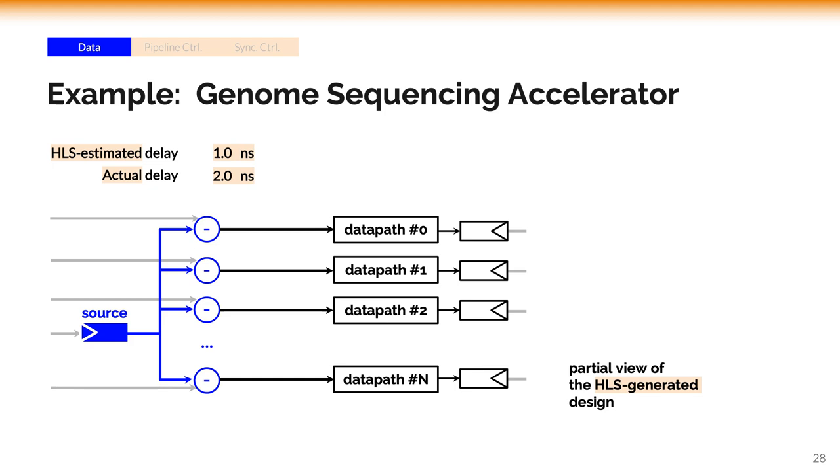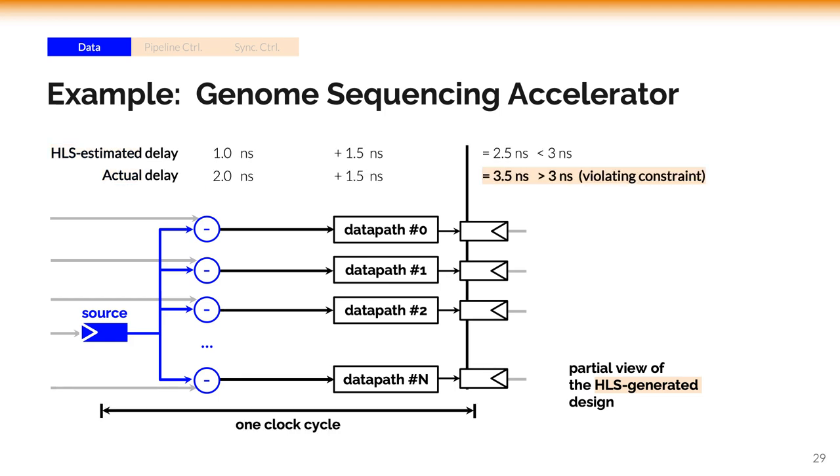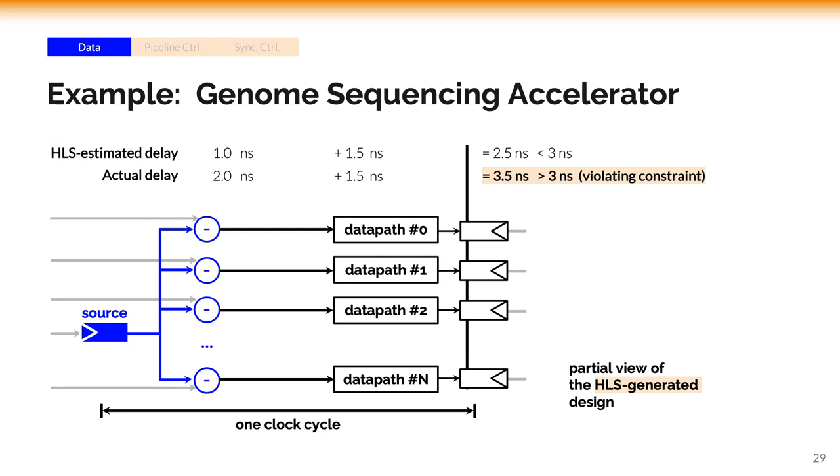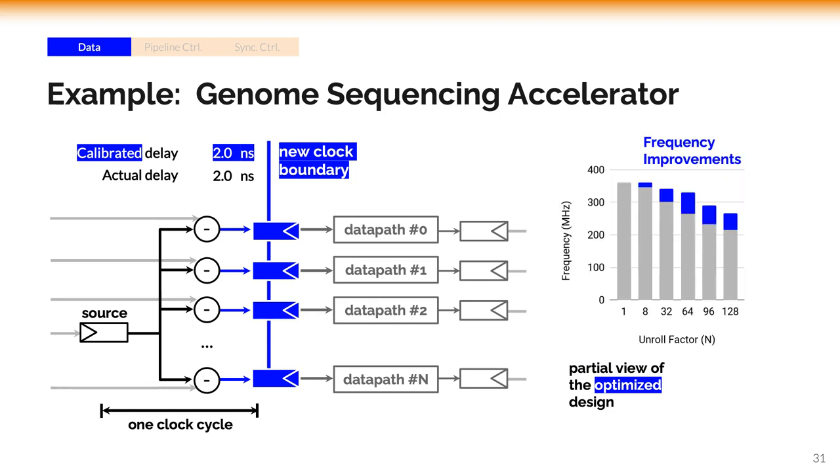Take a real genome sequencing design as an example, where a variable is broadcast to many data paths. The delay of this broadcast is underestimated by current tools. Therefore, the scheduler packs more operations into the same clock cycle and violates the timing constraint. While our approach successfully calibrates the broadcast delay and moves the clock boundary forward. With a more accurate prediction, the timing constraint is less likely to be violated, thus improving the frequency.